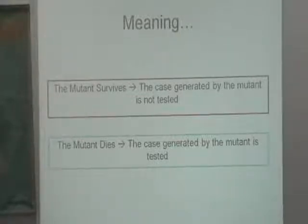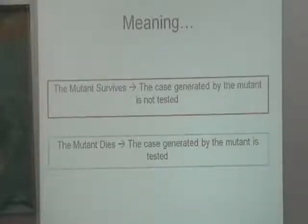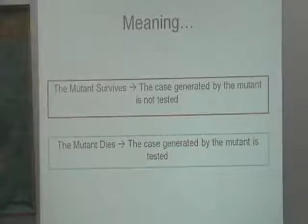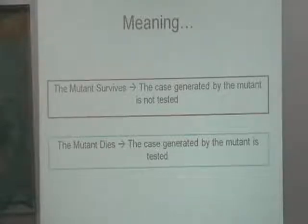Do we assume the mutant behavior will always be different from the original? No, that's not always the case. There are some tricks about how to do the mutation, and sometimes you have mutants that are semantically equal to the source code. That's something you have to research to make it run faster, and I'll talk about that a little bit later.